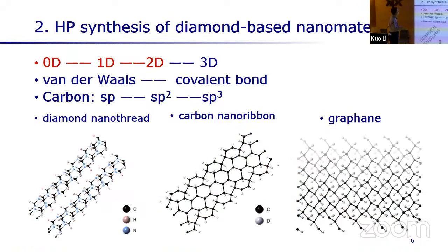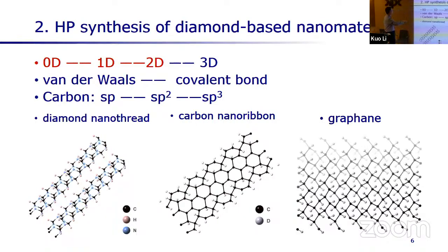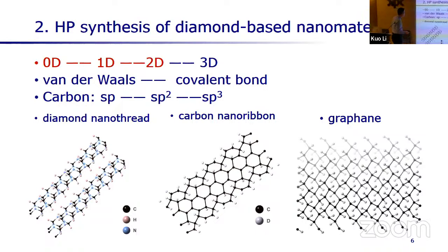In the second part, I'm going to introduce the high-pressure synthesis of several diamond-based nanomaterials. The logic is to start from zero-dimensional molecules and apply high pressure to compress them to form one-dimensional threads, sometimes one-D or two-D materials, and then two-D materials. If the molecular geometry and conditions allow, three-D materials can also be formed. In one word, it is a process from van der Waals interaction to covalent bond systems, and carbon transforms from SP hybridization to SP2 and SP3 hybridization.